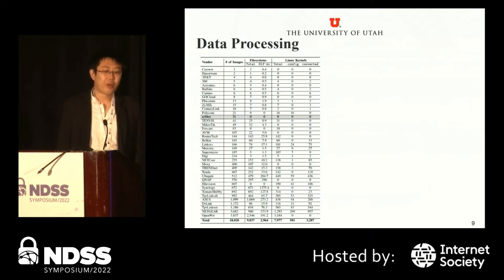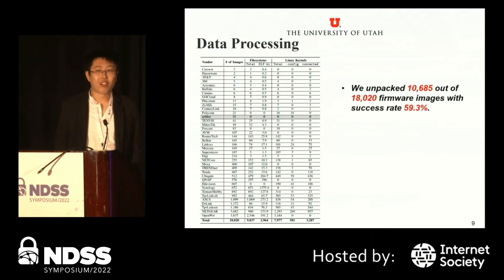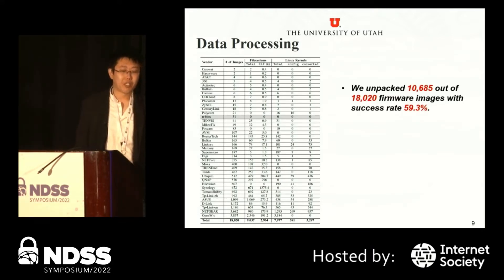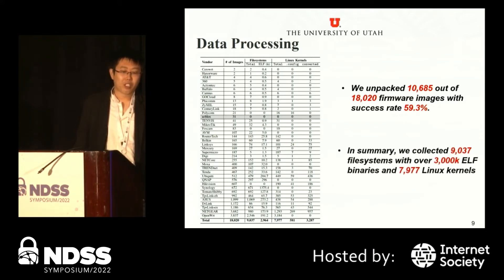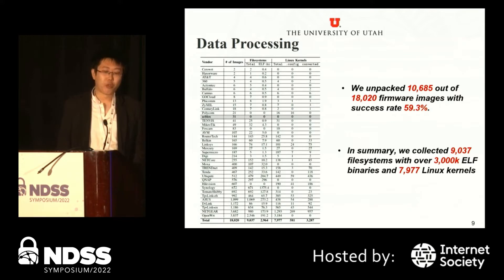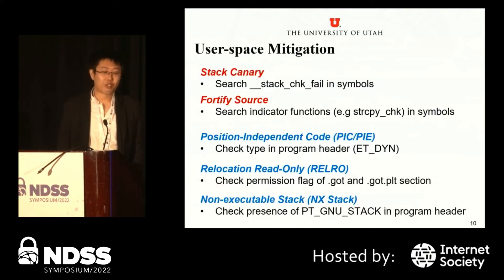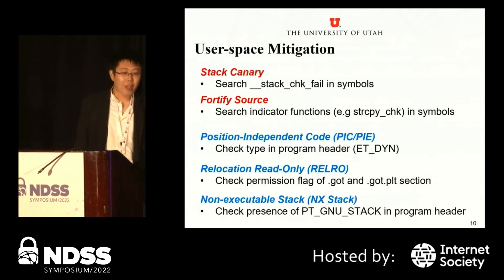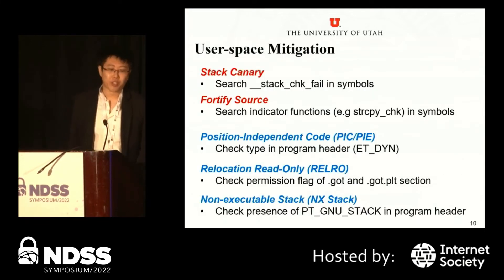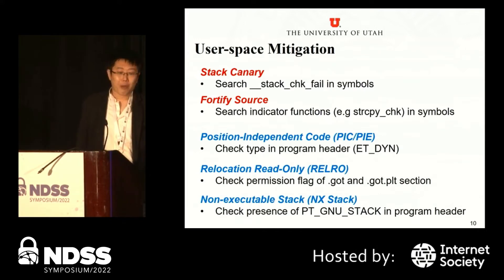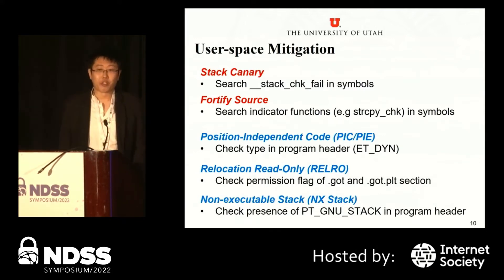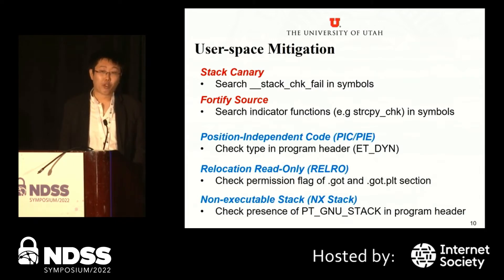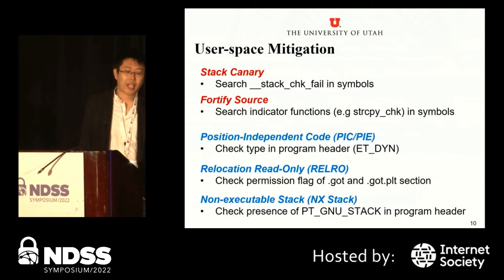In total, we collected over 80,000 firmware images from 38 popular vendors, ranging from 1998 to 2021, containing the most common types of embedded devices. To unpack the firmware images, we use a firmware unpacking tool from previous work, Firmadyne, designed on top of Binwalk, capable of extracting both file systems and the Linux kernel. A firmware is considered successfully unpacked if at least a file system or a Linux kernel is extracted. Of the 18,000 firmwares collected, we unpacked 10,000 with a success rate of about 58–59%, including over 9,000 file systems with 3 million ELF binaries and about 8,000 Linux kernels. In terms of user space mitigation, we include all mitigations popular in Linux system distributions: Stack Canary, FORTIFY_SOURCE, position-independent code, relocation read-only, and non-executable stack.